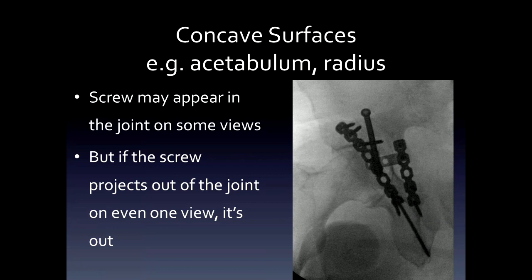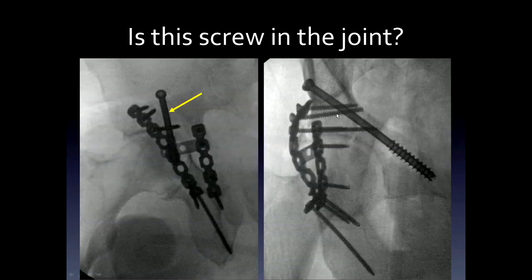In contrast, for concave structures such as the acetabulum or the distal radius, the screw can appear to be in the joint on some views, but if it projects out of the joint on even one view, then it's okay. Here's our intraoperative case — you can see all the screws and plates. It appears that this screw could be in the joint, but when you turn the patient, you can see that the screw is anterior, so the screw is not in the joint.